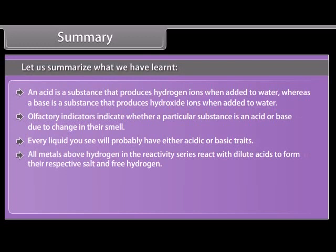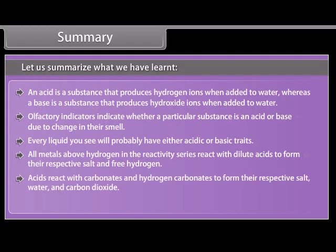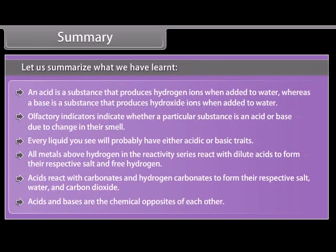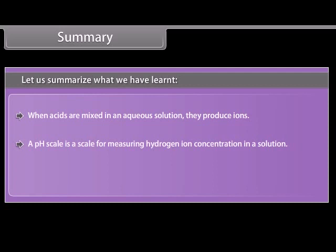All metals above hydrogen in the reactivity series react with dilute acids to form their respective salt and free hydrogen. Acids react with carbonates and hydrogen carbonates to form their respective salt, water and carbon dioxide. Acids and bases are the chemical opposites of each other. When acids are mixed in an aqueous solution, they produce ions. A pH scale is a scale for measuring hydrogen ion concentration in a solution. Salts are formed from the reaction between acids and bases.